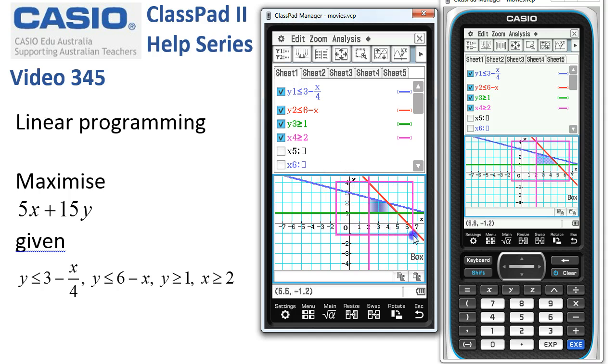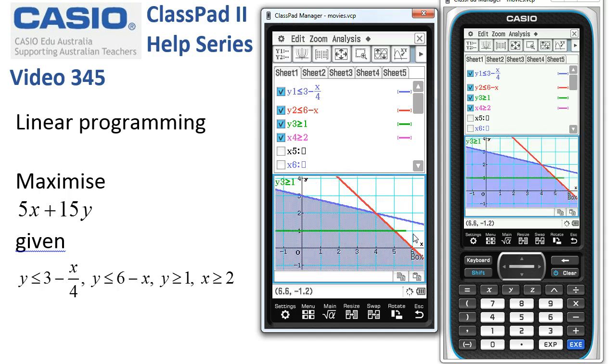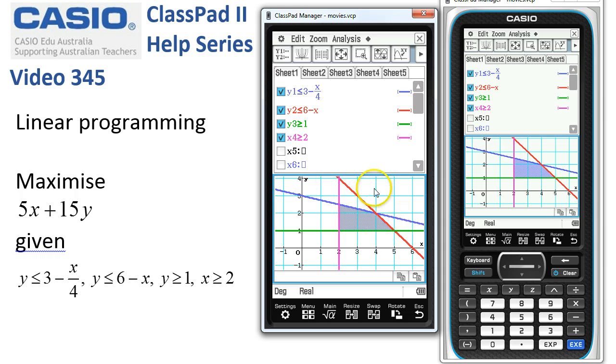I'll do a box zoom here and redraw it. So here's our feasible region. Our next job is to find the vertices of the feasible region.